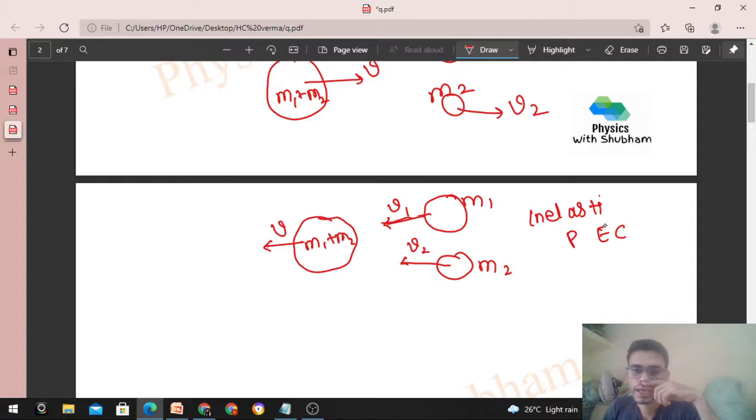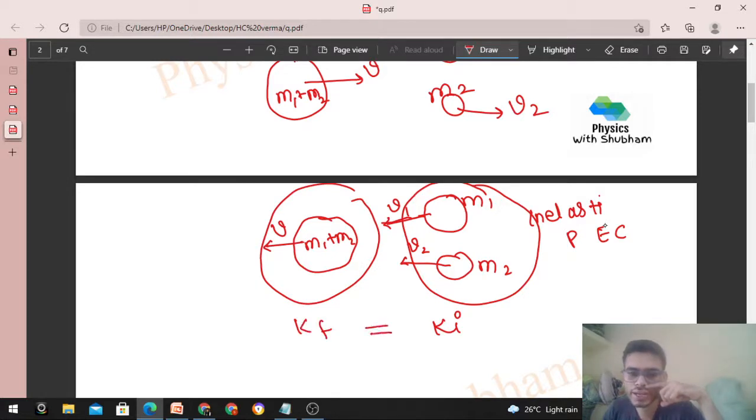And we know that in perfectly inelastic collision, the loss of kinetic energy is maximum. If I take this state as initial kinetic energy and this as my final kinetic energy, then I can write that initial kinetic energy must not be equal to final kinetic energy. There will be some change of kinetic energy.